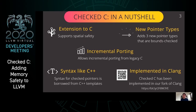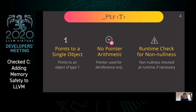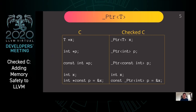Let's look at the three types of checked pointers that Check C adds. The first type is _Ptr of type T. This is a pointer to a singleton object, and it points to an object of type T. No pointer arithmetic is allowed for these types of pointers, and they are used only for dereference. The compiler will automatically add runtime checks for non-nullness if necessary. Every instance of T star in legacy C can be replaced with _Ptr of type T in Check C. You can also have modifiers like const and volatile.